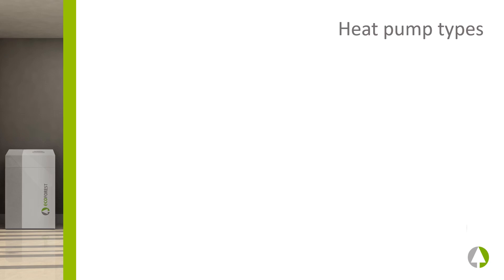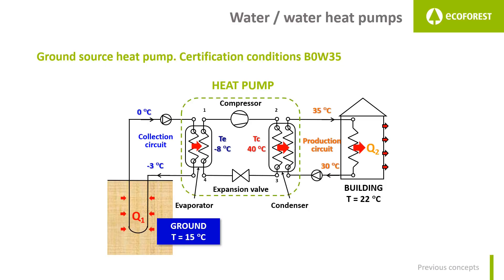In general, water-to-water heat pumps are associated with ground source and air-water heat pumps are associated with air source. This diagram refers to the operation of a water-to-water heat pump for its certification conditions: BRINE 0, water 35 degrees Celsius. The certification conditions are the conditions under which a heat pump is tested in a laboratory so that performance values such as COP, EER, etc. are then established.